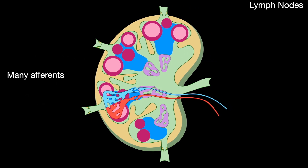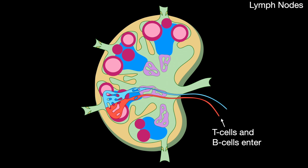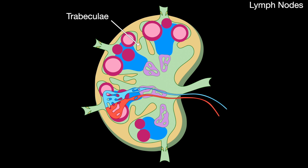Lymph nodes have many afferents and one or more efferents. They contain endothelial venules where T and B cells enter. They are encapsulated and contain trabeculae.